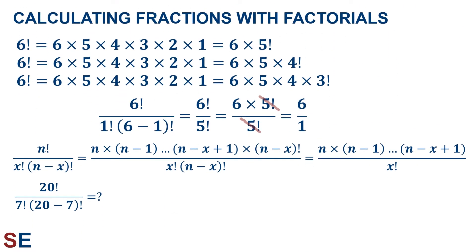Before we continue with the binomial probability calculations, let's take a look at calculating fractions with factorials. There are three different ways to represent 6 factorial. If we write out the whole thing — 6 times 5 times 4 times 3 times 2 times 1 — we can see it equals 6 times 5 factorial. Likewise, it's equal to 6 times 5 times 4 factorial, or 6 times 5 times 4 times 3 factorial. This is why the 6 factorial over 5 factorial simplified so easily in the example we just did.